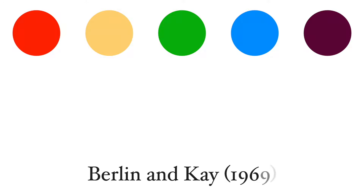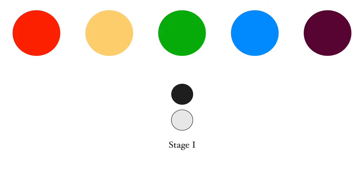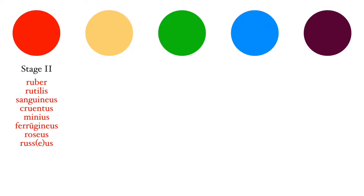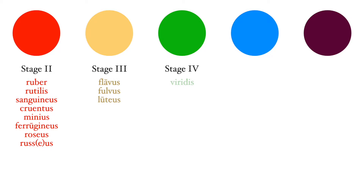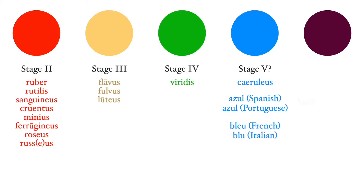The colors in Latin seem to map out well according to Berlin and Kay's universal evolution theory, which has a specific order of evolution of color terms. First come black and white — dark and light — and all languages have these. The next color to come is red, and we can see this with the many terms presented above, even if 'ruber' is the standard color. Yellow or green comes next, and again there are a lot of different terms for yellow: 'flavus,' 'fulvus,' 'luteus,' among others. Blue should come next, but there's some question whether 'caeruleus' means brilliant blue or some blue-green color. The fact that modern Romance languages take their word for blue not from Latin but from either Arabic or a Germanic language hints that blue was not as well established in Latin.